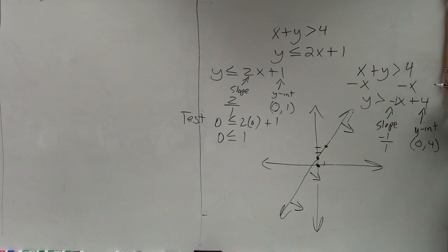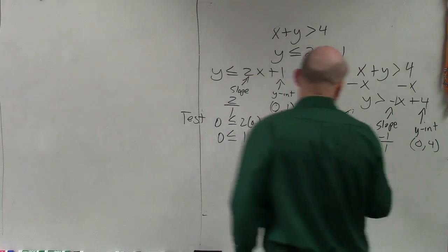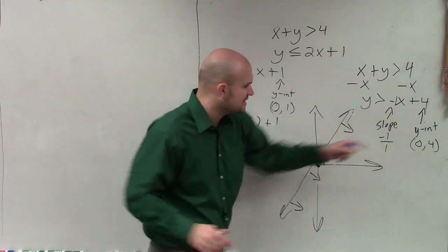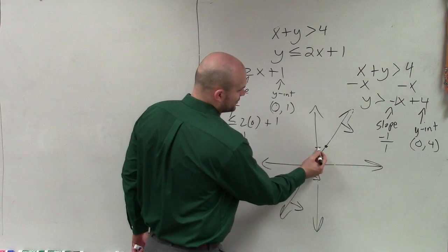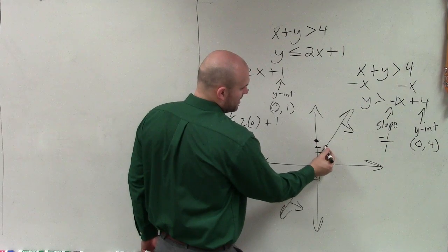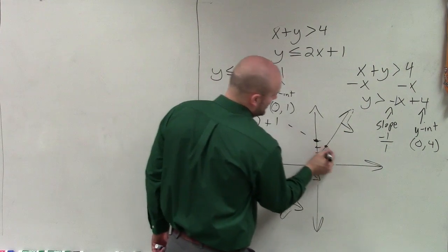Then I go to this one - y is greater than negative x plus 4. So my y-intercept is positive 4: 1, 2, 3, 4. And then my slope is down 1 to the right 1. This one is greater than, so it's a dashed line.